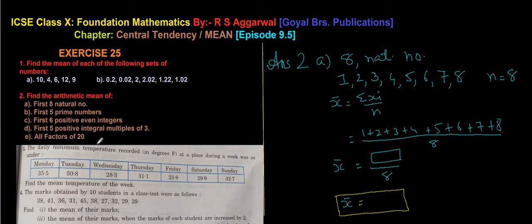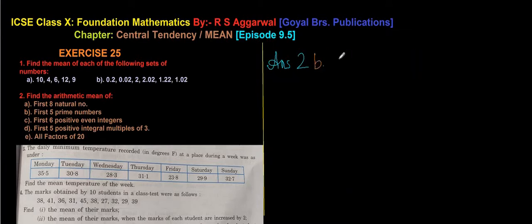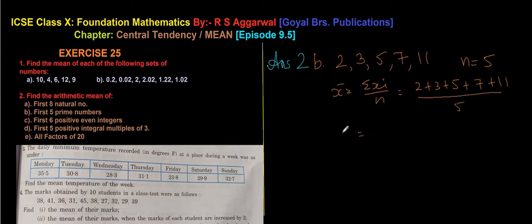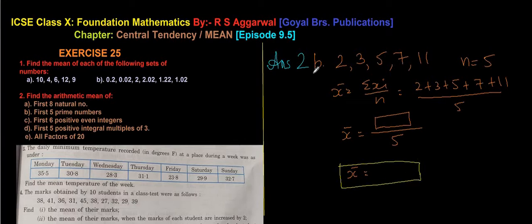For 2B, find the mean of the first 5 prime numbers. The first 5 primes are 2, 3, 5, 7, and 11. Note that 1 is a neutral number, not prime. So n = 5. x̄ = (2 + 3 + 5 + 7 + 11) / 5. Add those values, divide by 5, write x̄ and make a box.